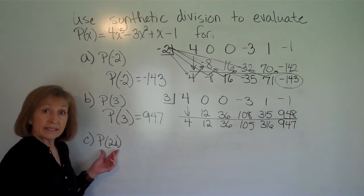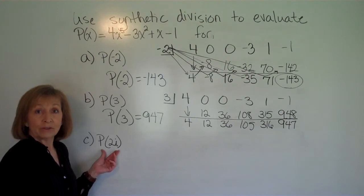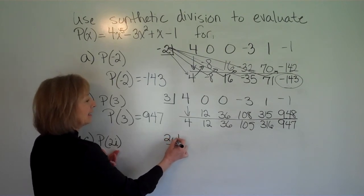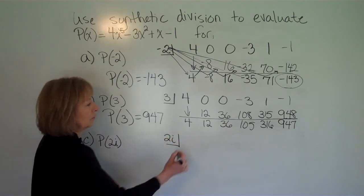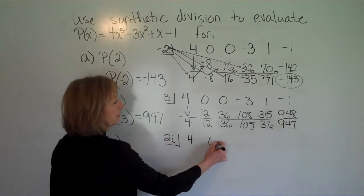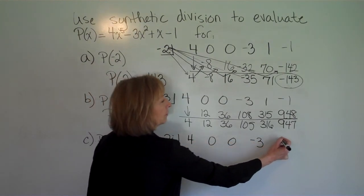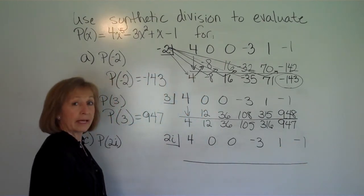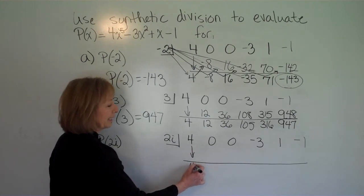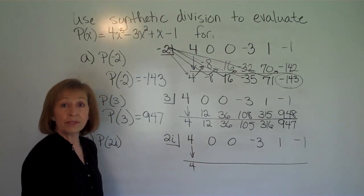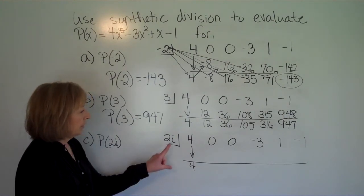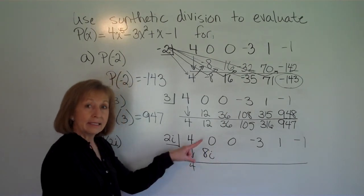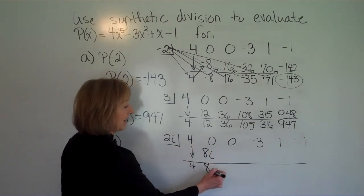This also works if we're evaluating the polynomial at a non-real complex number. So here we're going to put 2i in the half box, put our coefficients of 4, 0, 0, negative 3, 1, and negative 1, drop halfway down, draw the horizontal bar, and bring the first number down without doing anything to it. Then go through the same process: 2i times 4 is 8i, and 0 plus 8i is still 8i.